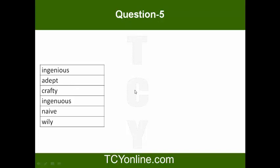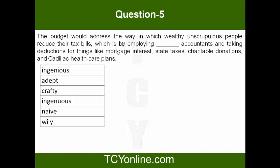Let's look at the question and finalize the answer. The budget would address the way in which wealthy, unscrupulous people reduce their tax bills. The budget is going to address these wealthy, unscrupulous people who reduce their tax bills. How do they do that? Which is by employing some type of accountants and taking deductions for things like mortgage interests, state taxes, charitable donations and Cadillac health care plans. I am looking for a word for fake accounts. These accountants are more or less like unscrupulous.